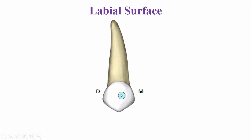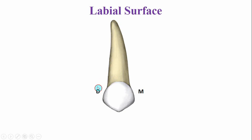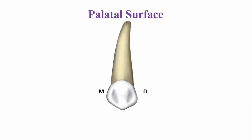The labial ridge is present, extending from the cusp tip to the cervical ridge. This is a single root, and usually the root is inclined in a distal direction.